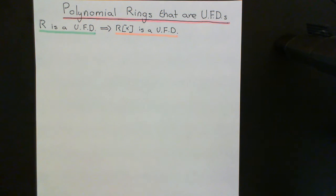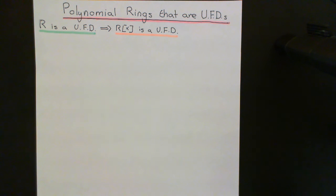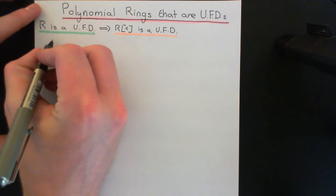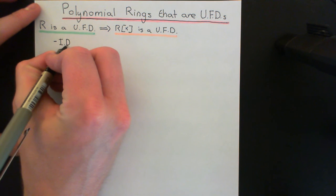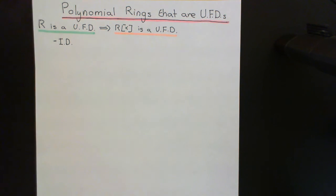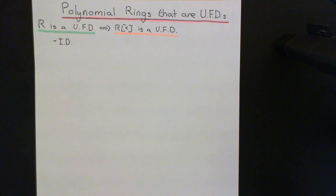Let's remind ourselves of the definition of a unique factorization domain. A unique factorization domain is a special type of ring — it's an integral domain fundamentally. A unique factorization domain must be an integral domain, and remember an integral domain is a non-zero commutative ring which also obeys the property that whenever you multiply together two non-zero elements in that ring, you always end up with a non-zero answer.